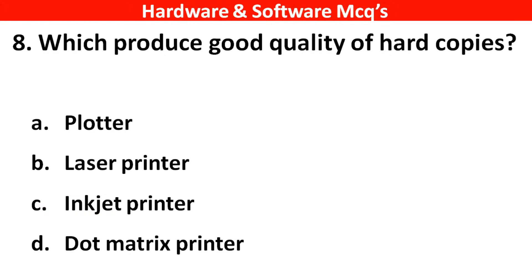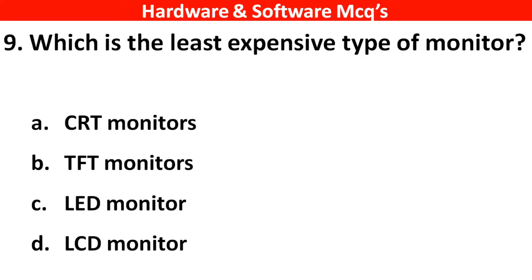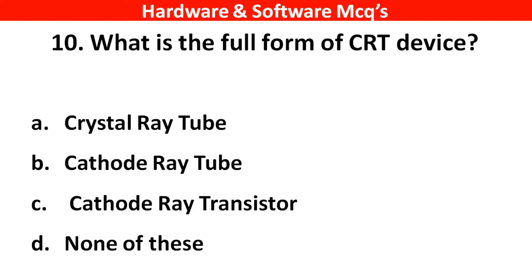Next question: Which produces good quality hard copies? The right answer is option C — inkjet printer. Next question: Which is the least expensive type of monitor? The right answer is option A — CRT monitor. Next question: What is the full form of CRT device? The right answer is option B — cathode ray tube.